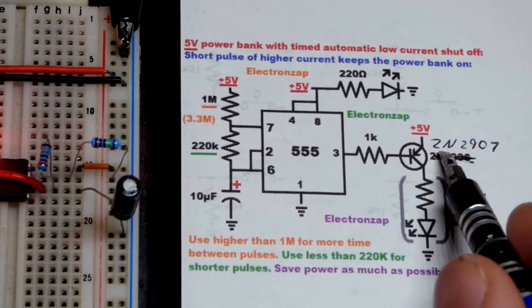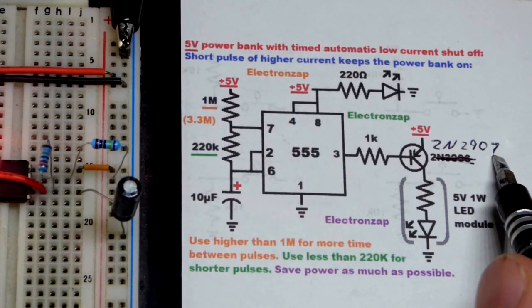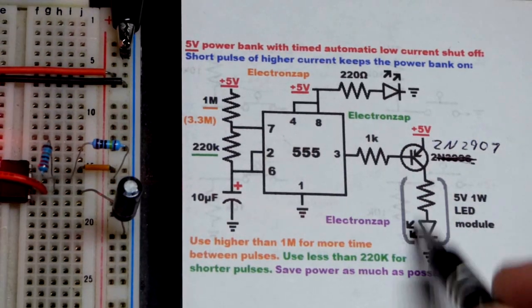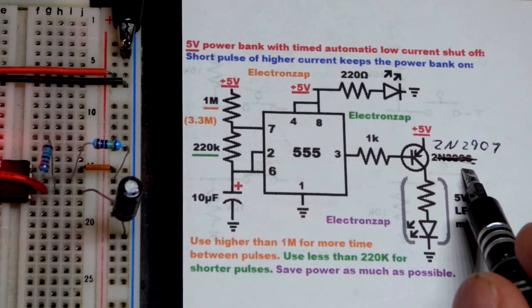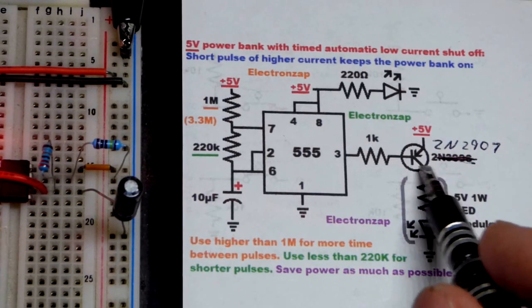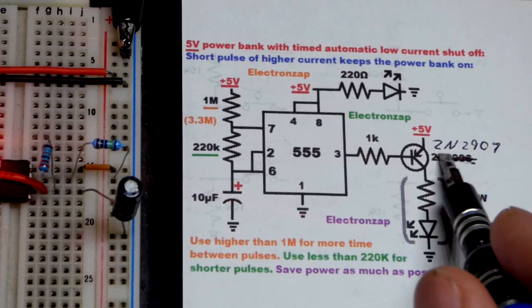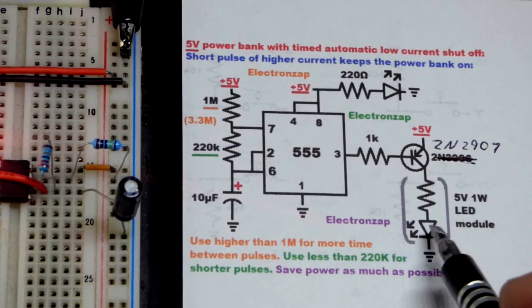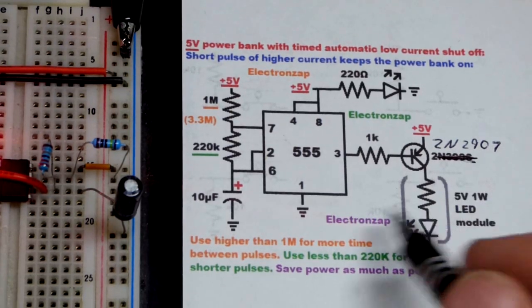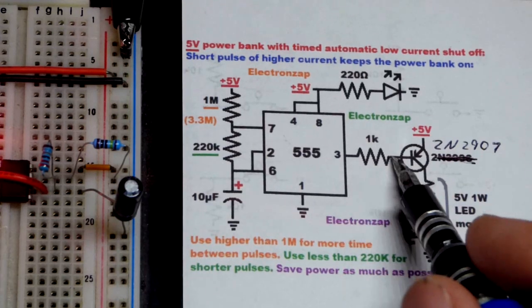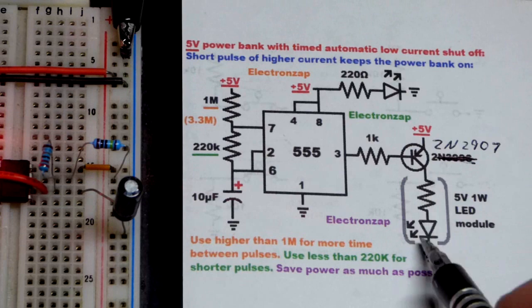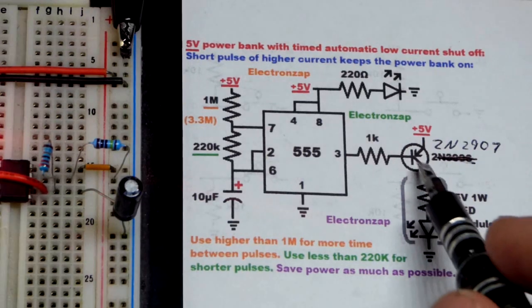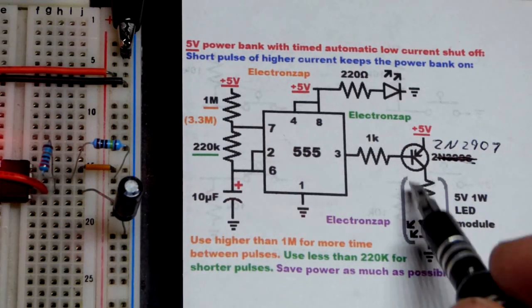I forgot to change the transistor to 2N2907 because we're switching more than 200 milliamps of current. It's brief though, so maybe we could get away with the 2N3906, but that's a lot of current for a 2N3906. 2N2907 would be better. We do need a fair amount of base current to turn the transistor on because we're switching a high current load. Their gain goes down as you need more current.